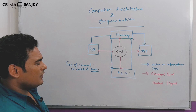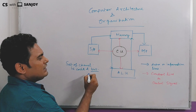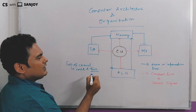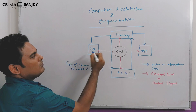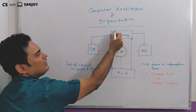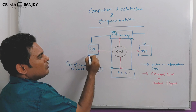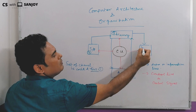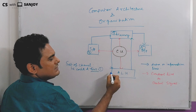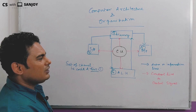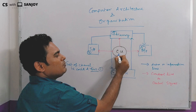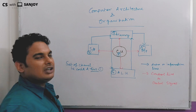Here we have the components: number 1 is bus, number 2 is memory, number 3 is input device, number 4 is output device, number 5 is ALU, and number 6 is control unit.